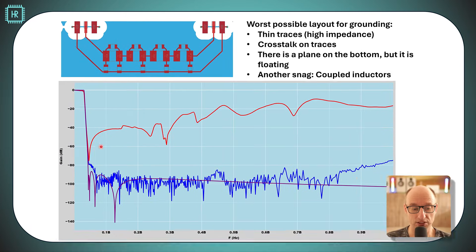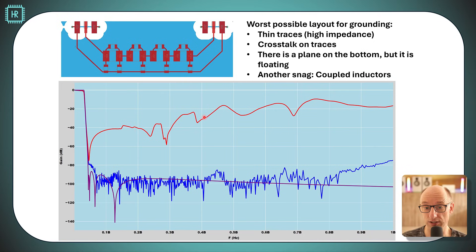Now when we look at the characteristic we see the red line. The red line is what this layout is doing. The purple line was our ideal simulation and the blue line is actually what I can achieve using those three rules. You can see there's a huge difference between the worst possible layout and the best possible layout.